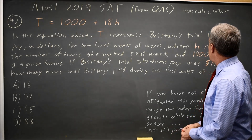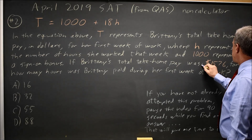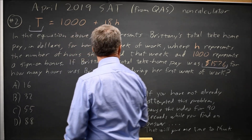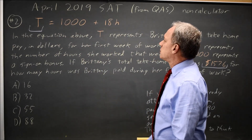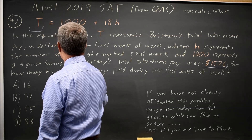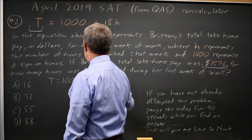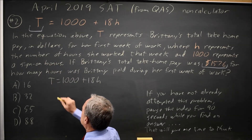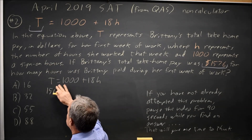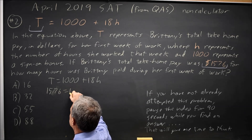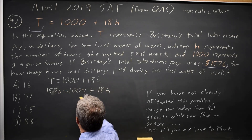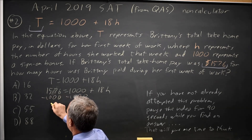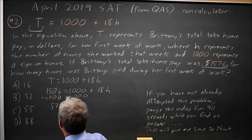If her total take-home pay is $1,576, they want you to find h. So I'm going to take the equation t equals 1,000 plus 18h and substitute in $1,576 for t. Subtracting 1,000 from both sides gives us 576 equals 18h.